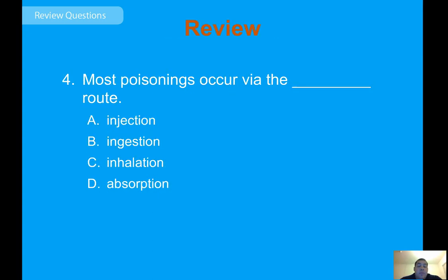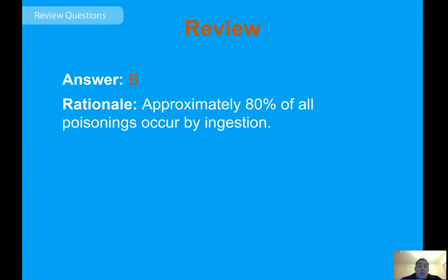Practice question: Most poisonings occur via which route? Approximately 80 percent of all poisonings occur by ingestion.